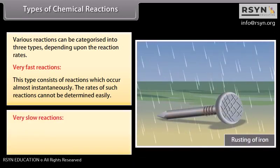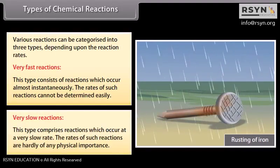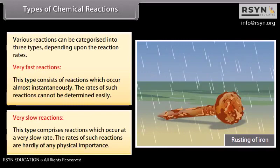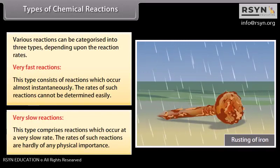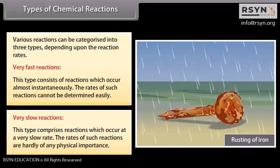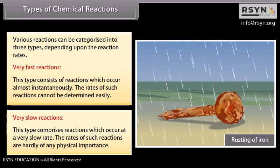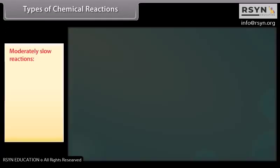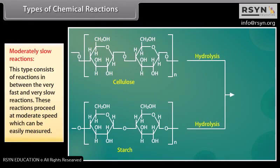Very slow reactions: this type comprises reactions which occur at a very slow rate; the rates of such reactions are hardly of any physical importance. These reactions may require months or even years for their completion. For example, rusting of iron. Moderately slow reactions: this type consists of reactions in between the very fast and very slow reactions. These reactions proceed at a moderate speed which can be easily measured. For example, hydrolysis of starch.